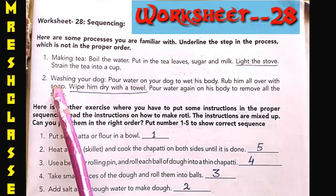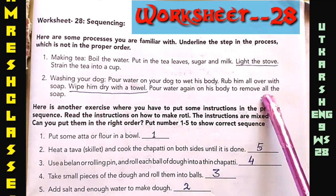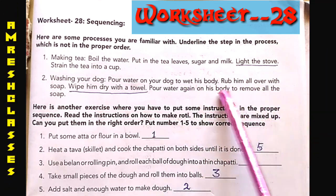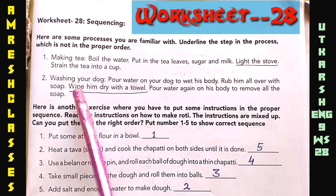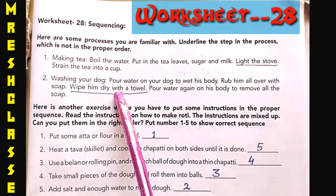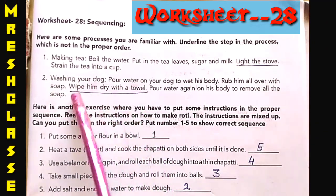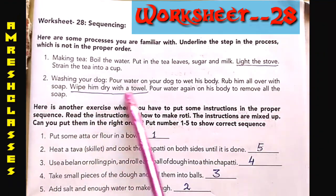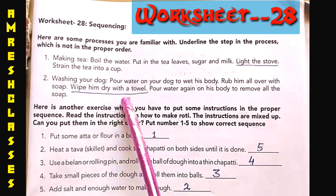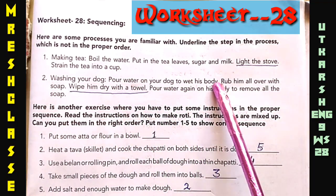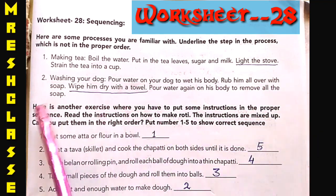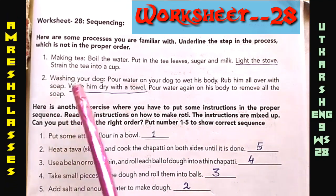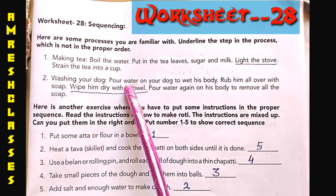To remove all the soap, pour water again on his body to remove all the soap. Then wipe him dry with a towel. So the step 'wipe him dry with a towel' needs to be checked — that is the step which is out of order. So we have to underline it. The correct sequence is: pour water on your dog to wet his body (number one), rub him all over with soap (number two), pour water again on his body to remove all the soap (number three), wipe him dry with a towel (number four).